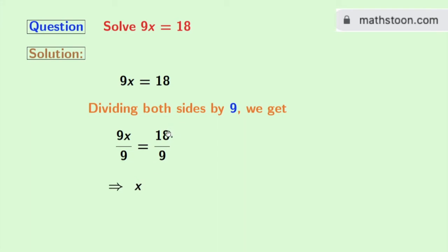And in the right hand side we have 18 by 9 which means 2. So finally we get x is equal to 2 as our answer.